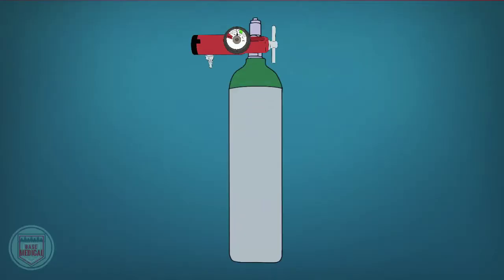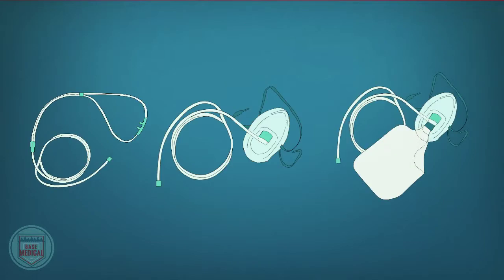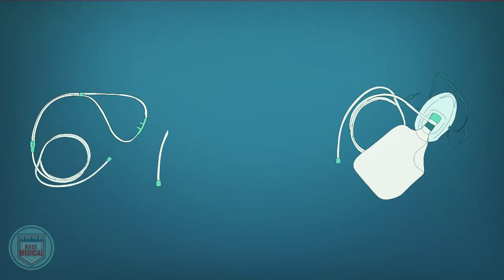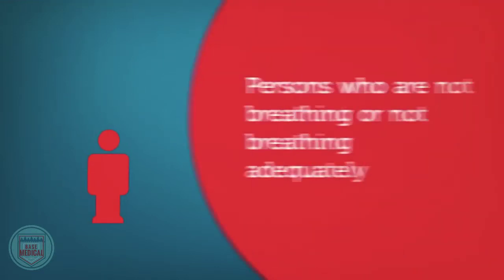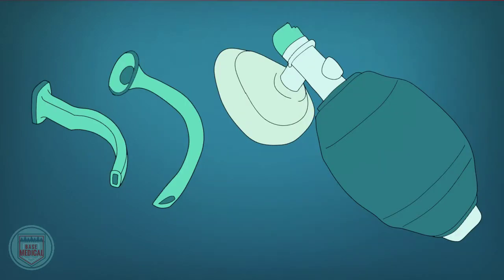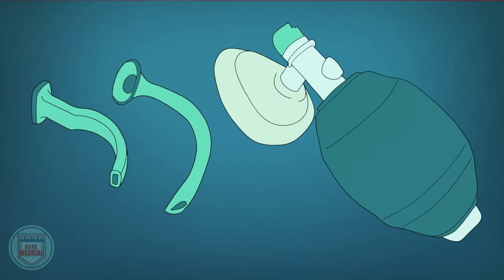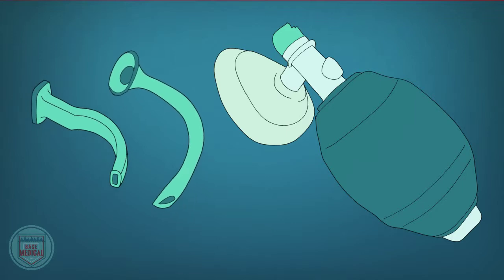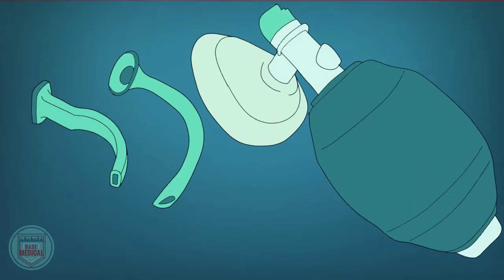In the previous video, we covered how to assemble an oxygen tank and use the various oxygen delivery devices for patients who are still breathing adequately. In this video, we will learn the steps necessary to manage the airway in patients who are not breathing. We start with airway adjuncts, the OPA and NPA, and then move on to use a BVM.